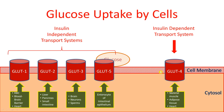GLUT4, on the other hand, is an insulin-dependent transport system — it requires insulin to transport glucose into the cytosol. In type 2 diabetes mellitus, where there is insulin deficiency, the number of GLUT4 transporters decreases significantly. As a result, glucose cannot enter the cytosol and accumulates in the blood plasma, causing blood glucose levels to rise.